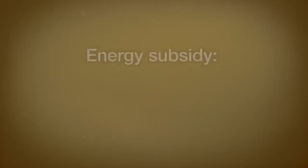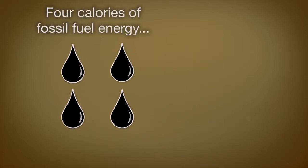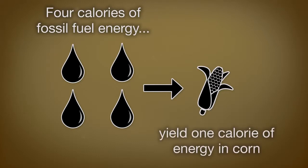When considering any kind of agricultural method, it's valuable to know the energy subsidy, which is the energy required for each calorie of food produced. For example, when growing corn, there might be four calories of fossil fuel energy expended to yield one calorie of corn. The energy subsidy for conventionally grown corn is four calories — that accounts for the tractors, the irrigation, the fertilizer, the pesticide, and all the fossil fuel energy inputs that go into growing that corn.